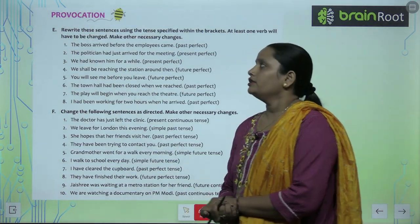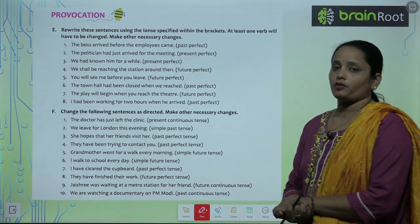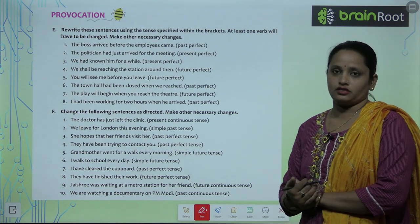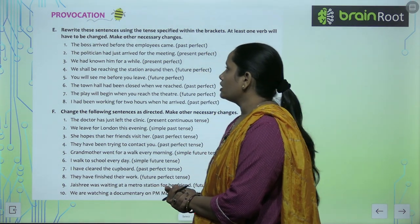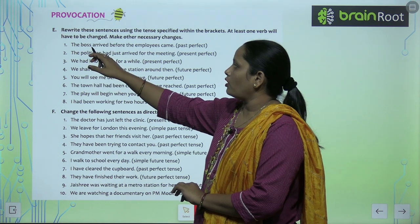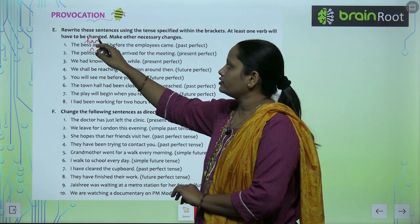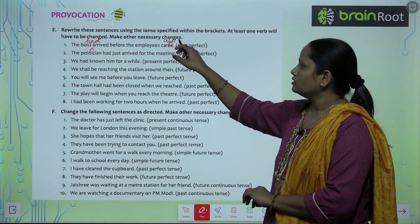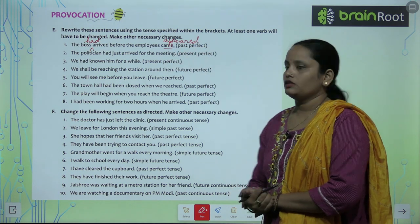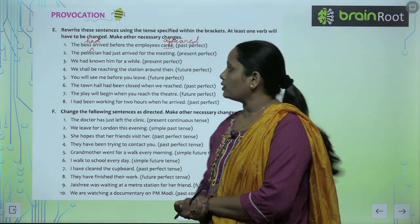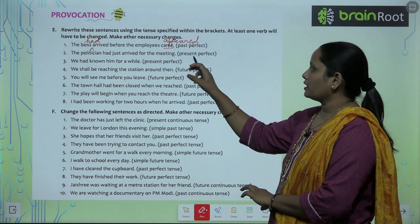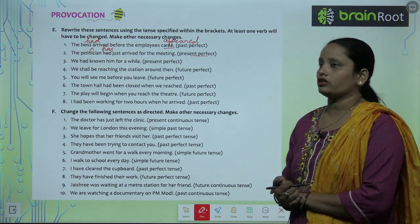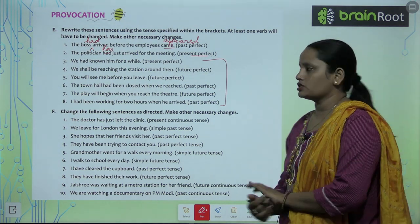Now let's move on to question E — rewrite these sentences using the tense specified in the bracket. At least one verb will be changed; make other necessary changes. First: The boss arrived before the employees came — answer: The boss had arrived before the employees appeared. Second: The politician had just arrived for the meeting — change to present perfect tense — answer: The politician has just arrived for the meeting. Complete these questions on your own.